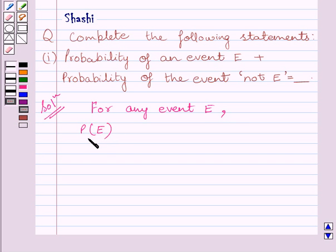P(E), that is probability of an event E plus P(E bar), that is probability of the event not E is equal to 1.